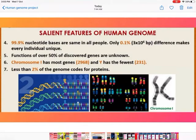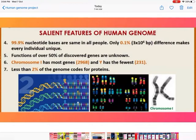Point 4: 99.9 percent of nucleotide bases are the same in all people. Only 0.1 percent difference makes every individual unique. Point 5: Functions of over 50 percent of discovered genes are unknown — we still don't know what they do.